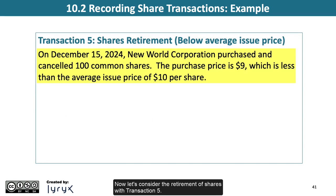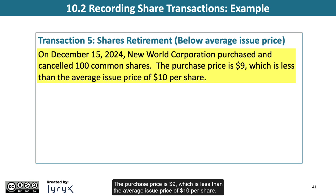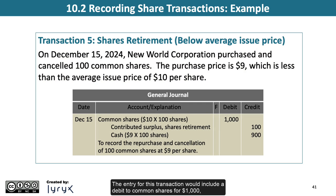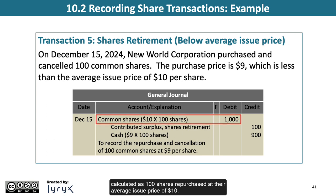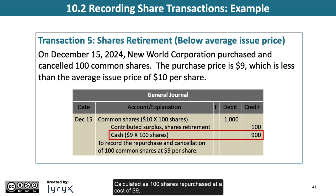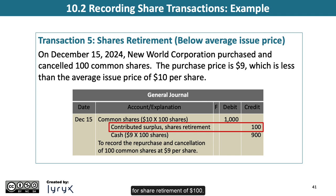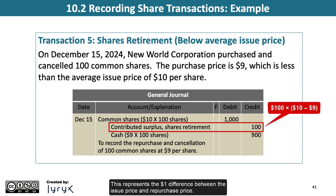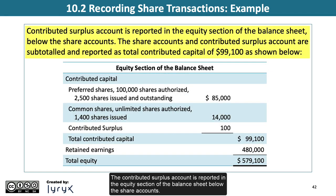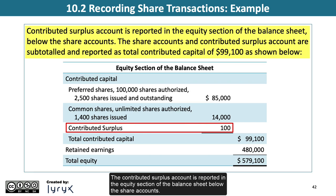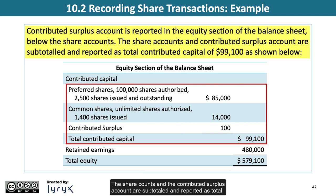Now let's consider the retirement of shares with Transaction 5. On December 15, 2024, New World Corporation purchased and cancelled 100 common shares at a purchase price of $9, which is less than the average issue price of $10 per share. The entry includes a debit to common shares for $1,000 (100 shares at the $10 average issue price), a credit to cash for $900 (100 shares at $9), and the balancing amount is a credit to Contributed Surplus for share retirement of $100, representing the $1 difference between the issue price and repurchase price. The Contributed Surplus account is reported in the equity section below the share accounts, and together they are subtotaled as total contributed capital of $99,100.